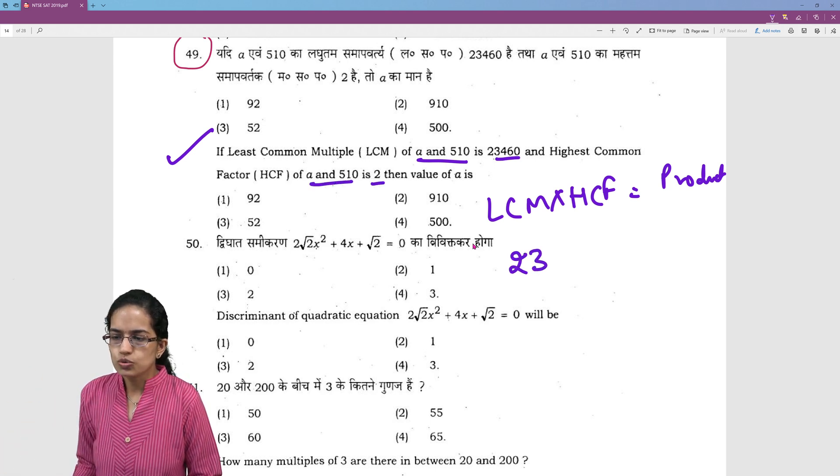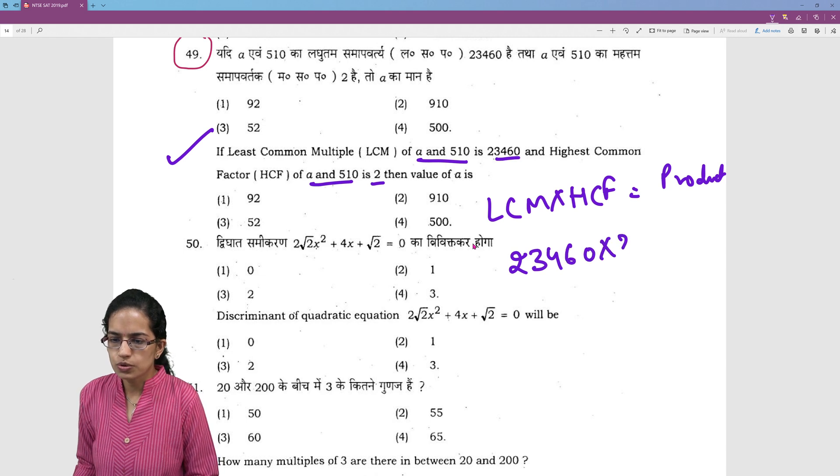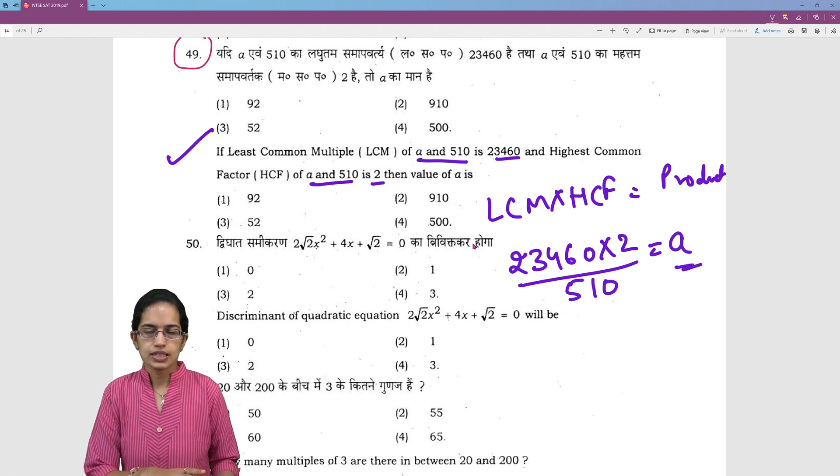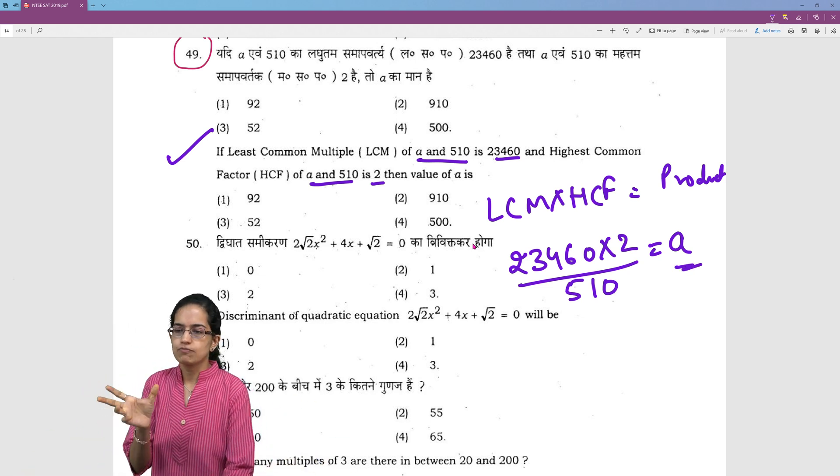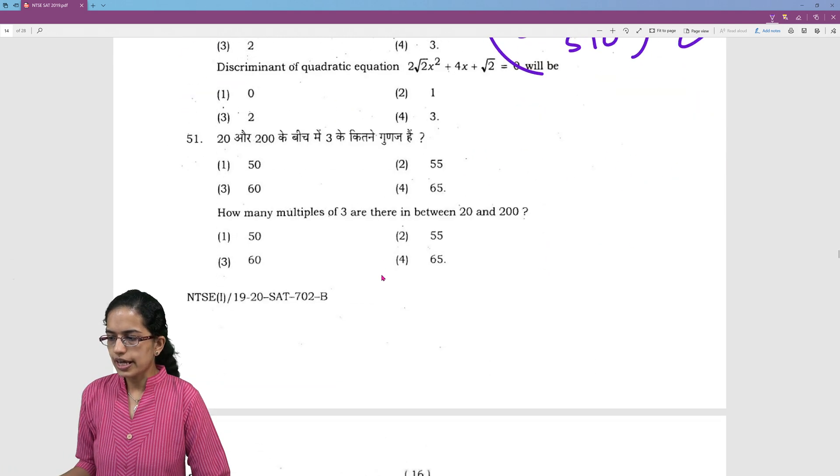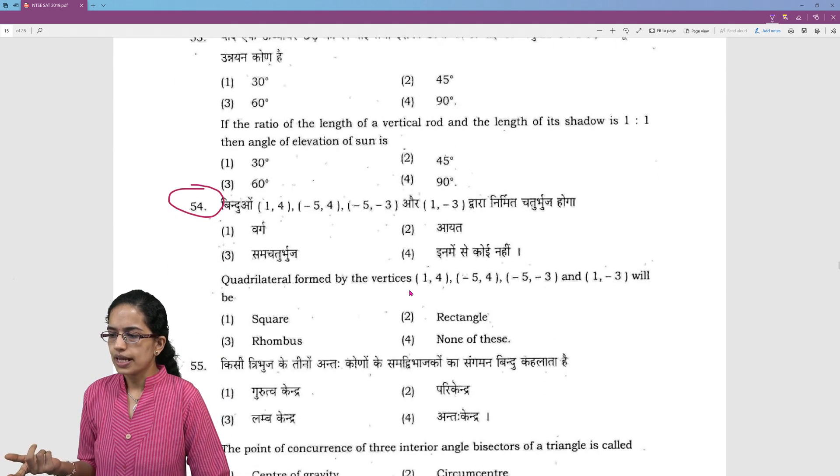So I write it as 2, 3, 4, 6, 0 into 2 divided by 510. That would be equal to A which is another number. So A into 510 would be equal to this much. I solve this and I get the value for A. Again a very simple and a direct question.